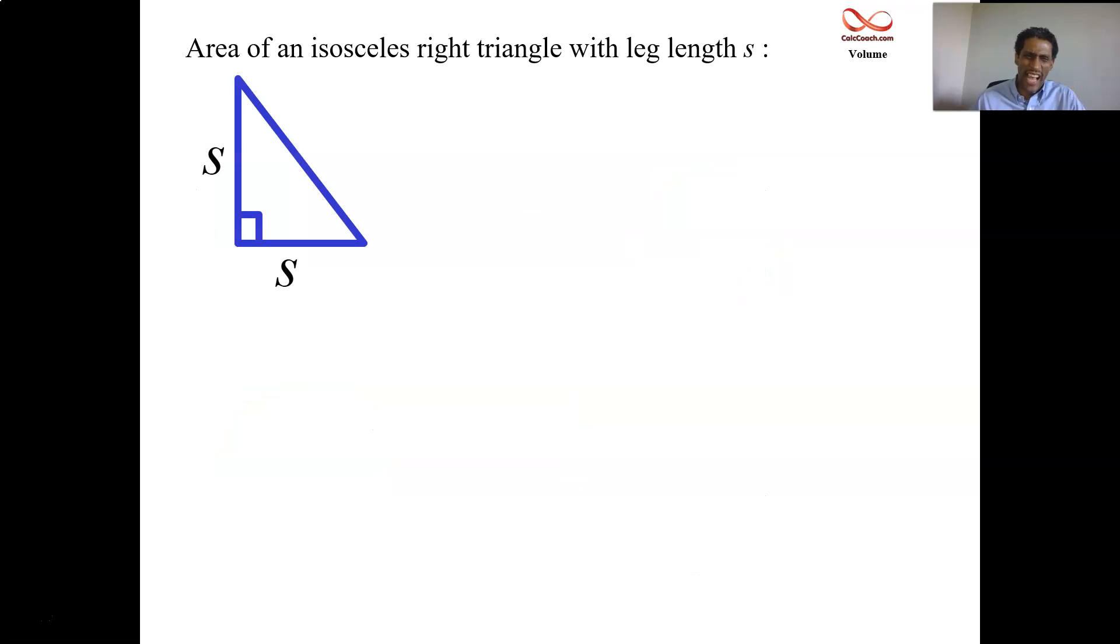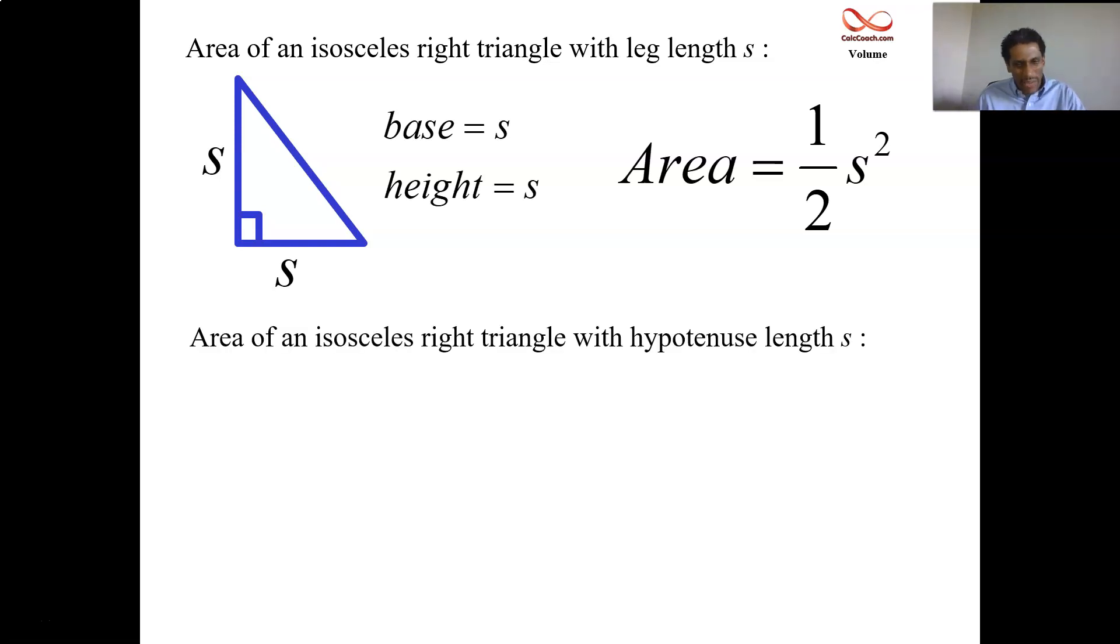What about these isosceles right triangles? It's just half of a square. One half the base times the height. So the base is s and the height is s, so we have one half of s squared. Now take this isosceles and turn it on its side where the base is the hypotenuse that's running along the base, and we're going to get a more complicated formula.